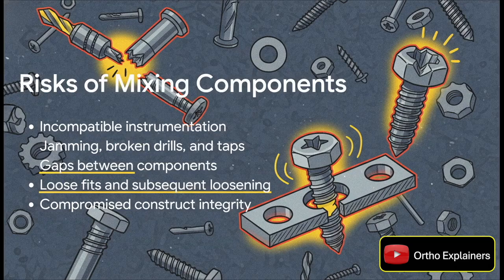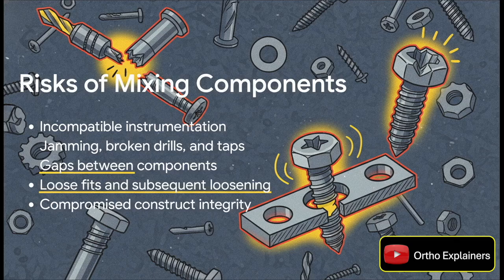The risks here aren't just theoretical or metallurgical — they are immediate and mechanical. You can run into incompatible instrumentation right there in the OR, leading to jamming, broken drill bits, or stripped screw heads. You can create microscopic gaps between plates and screws from different systems, leading to a loose fit, toggling, and eventual loosening of the entire construct. The bottom line: the integrity of your construct is compromised from the moment you mix components.